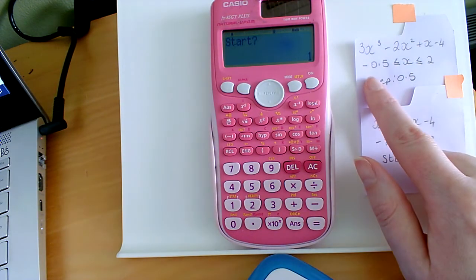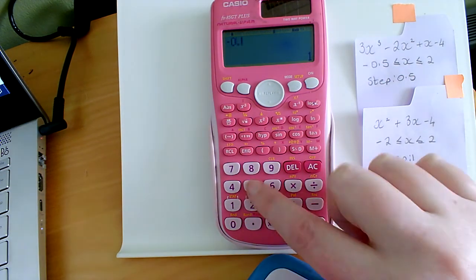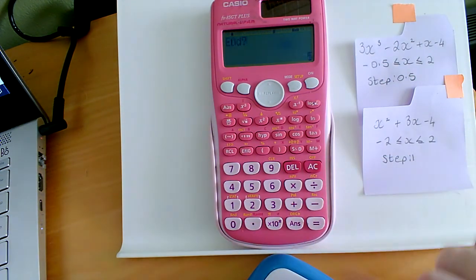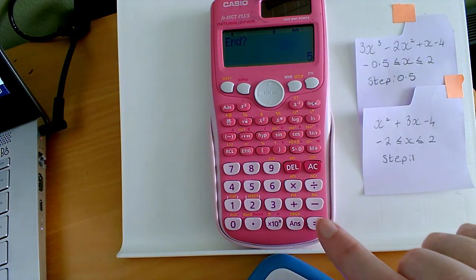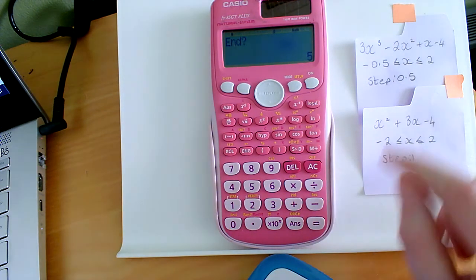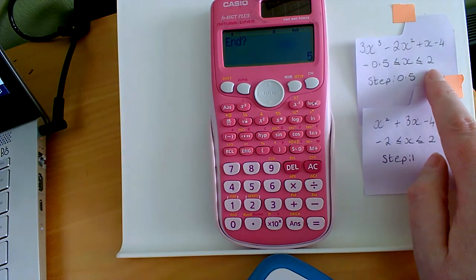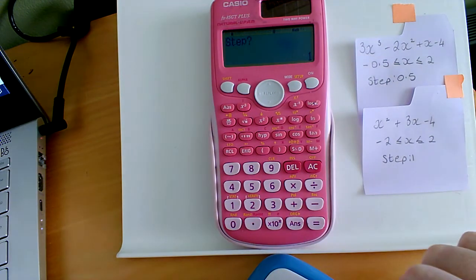You can see over here my x begins at minus 0.5. So I'm going to use the minus button, 0.5 and then I'm going to press equals. Generally, if you just change your calculator into this mode, the start point will be 1. So you're just going to change that to whatever it is in your question. My end point here is the number 2. So I'm going to press 2 and then equals.